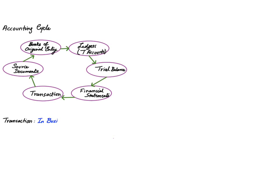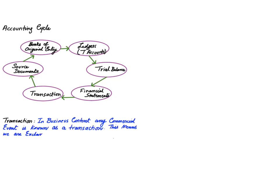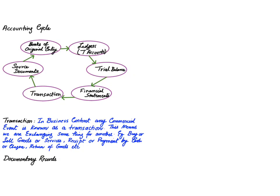Now, what is a transaction? In any business, whenever we buy something it is a transaction. Whenever we are selling something to customers it is also a transaction. Whenever a customer is paying us, or we are paying a supplier, or we are returning goods — any commercial event taking place in the business is known as a transaction.